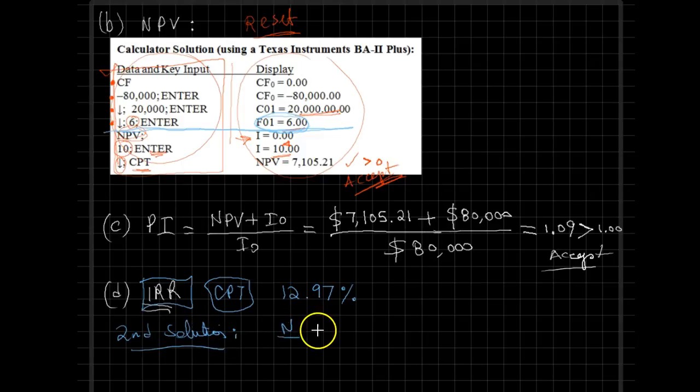Alternatively, a second solution would simply rely on the third row of our financial calculator, so this is PV, payment, and FV. We know that this is a six-year project. We are interested in figuring the IRR, so that one would be a question mark.